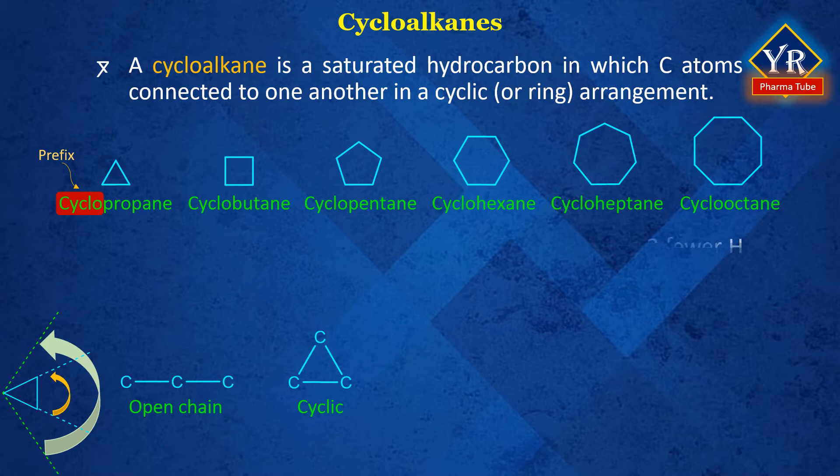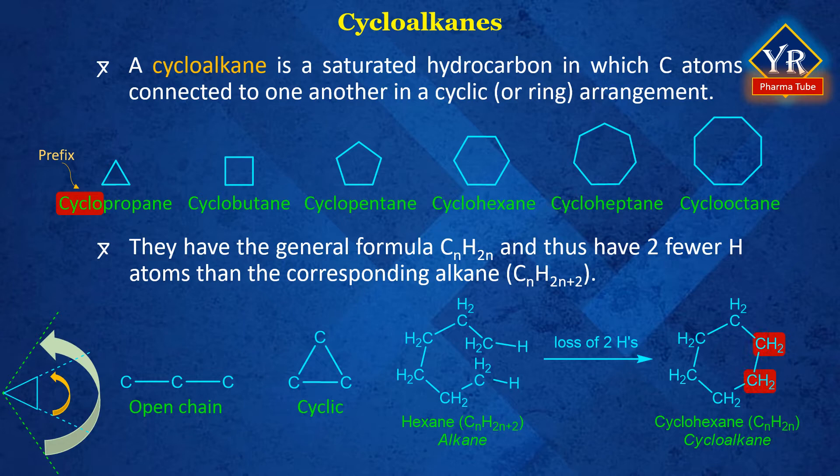Because of the ring, a cycloalkane has two fewer hydrogens than an acyclic or non-cyclic alkane with the same number of carbons. This means they have the general formula CnH₂n, and thus have two fewer hydrogen atoms than the corresponding alkane, CnH₂n₊₂. The relationship that exists between an alkane and a cycloalkane is shown for hexane and cyclohexane.